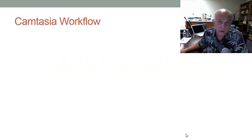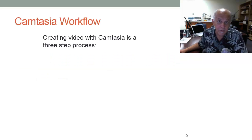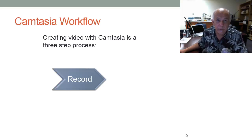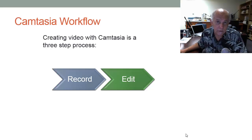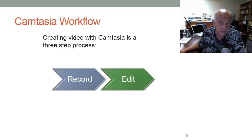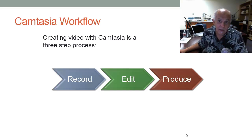So we're going to talk about the Camtasia workflow. The basic three-part workflow is to record your video — what I'm doing right now — edit it, which is typically where you spend almost all of your time, adding call-outs and pan and zoom effects and that sort of thing, which is for another workshop, and then produce the video, which we'll talk about today.